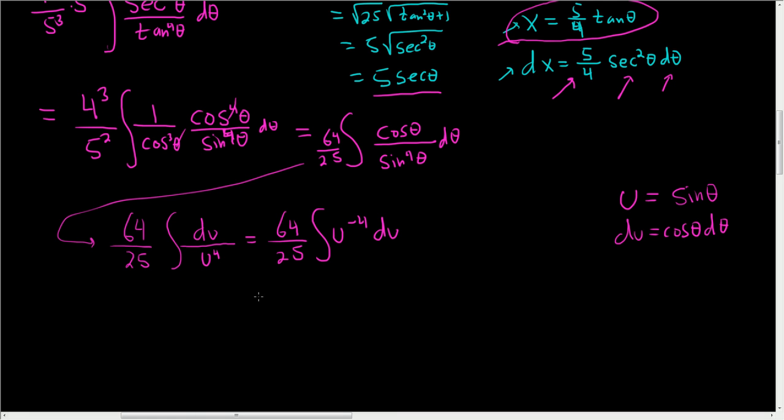Very tough problem. I did not know it would be this long. So this is 64 over 25. We add 1 here. So we get u to the negative 3 over negative 3. And we add our constant c. Multiplying 3 times 25, we get negative 64 over 75. And it's 1 over u cubed, but we said u was sine. So it's 1 over sine cubed theta plus c.